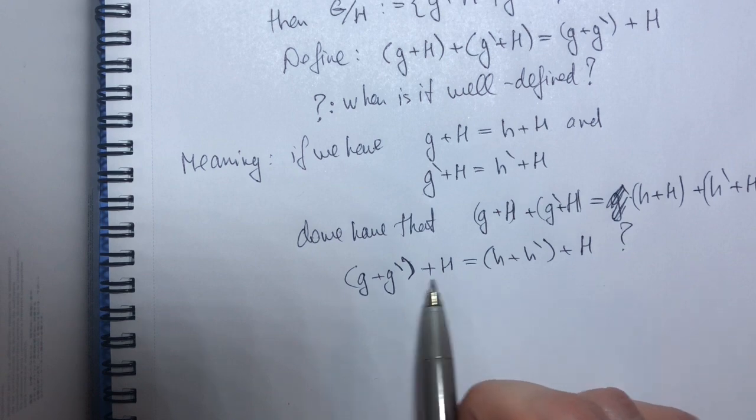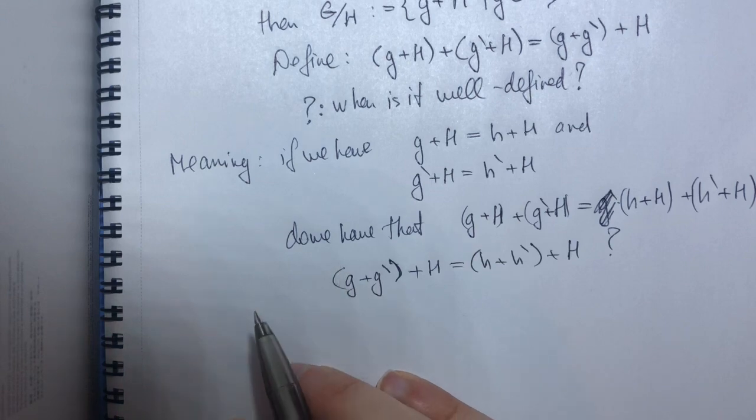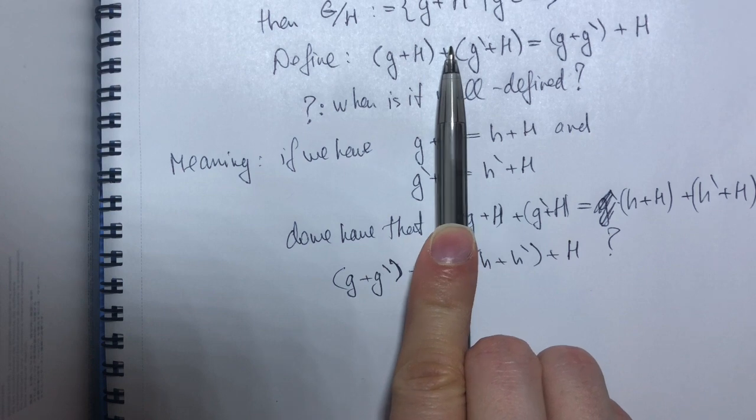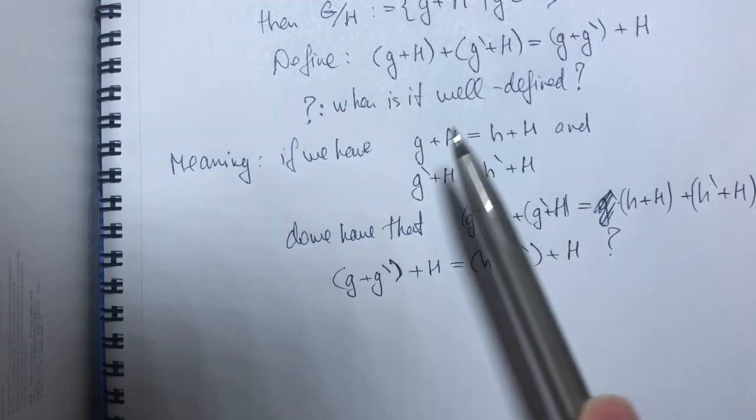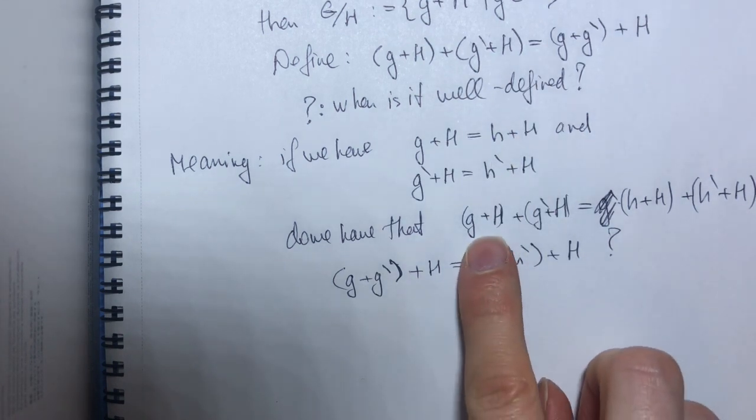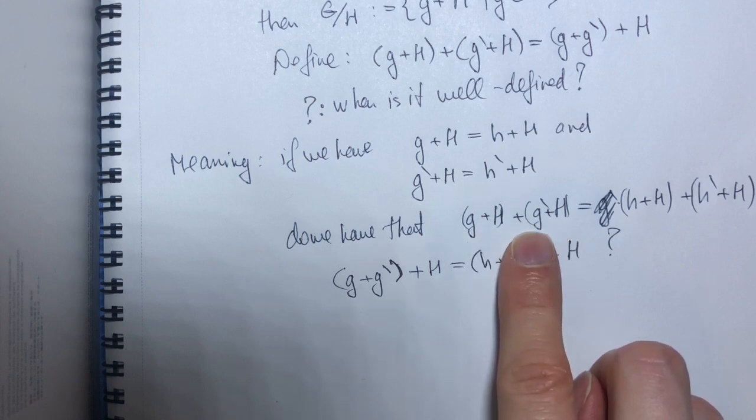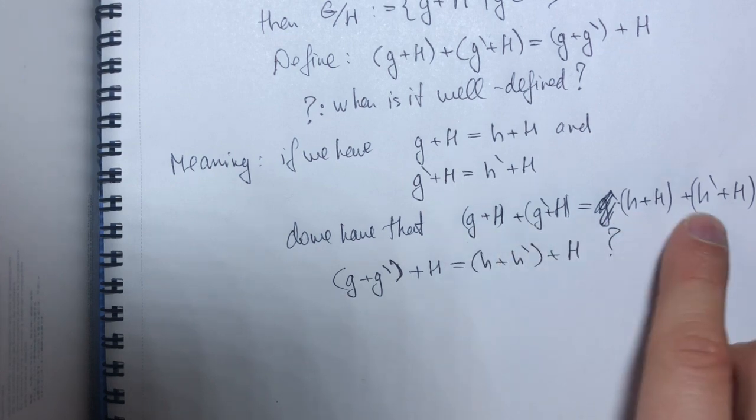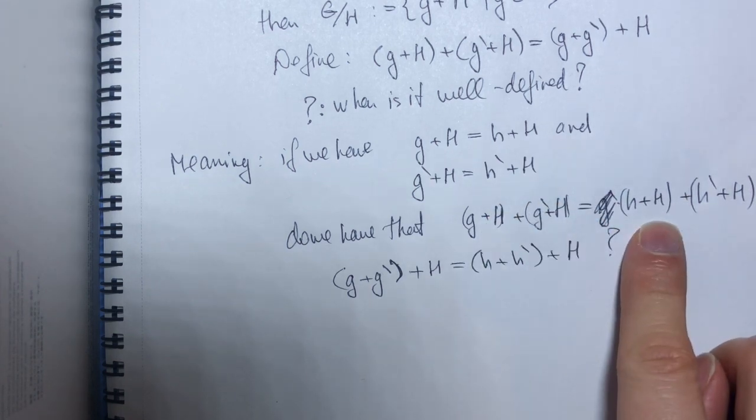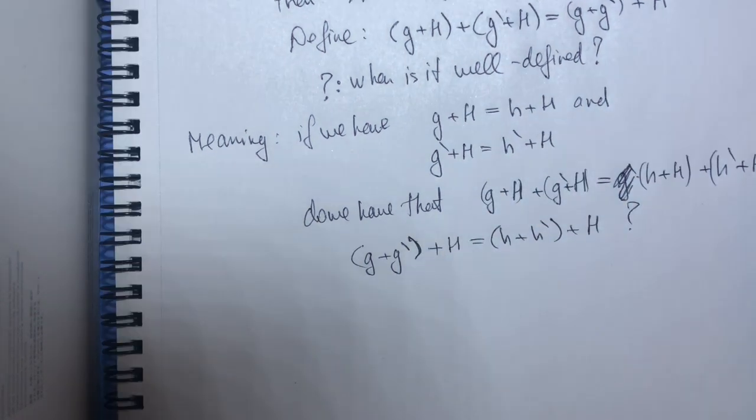So the reason why we need to check for that is the following: imagine that I didn't have my cosets here, I just had elements g and g' equal to h and h', then my relation would become g + g' equals h + h'. Now in the group that statement is obvious, it's trivial, but here it is not.